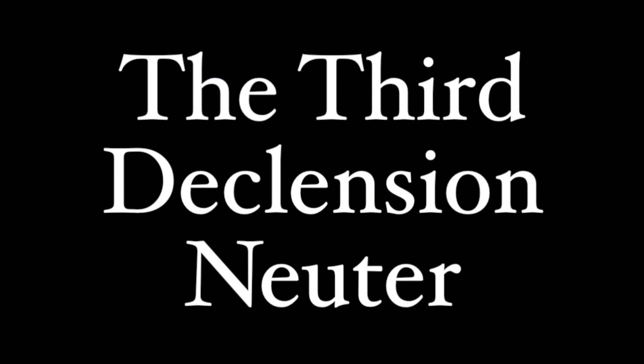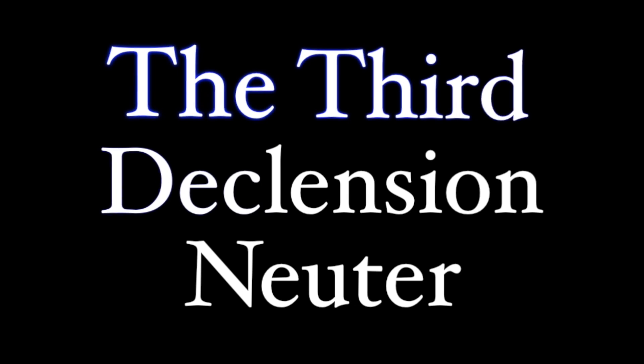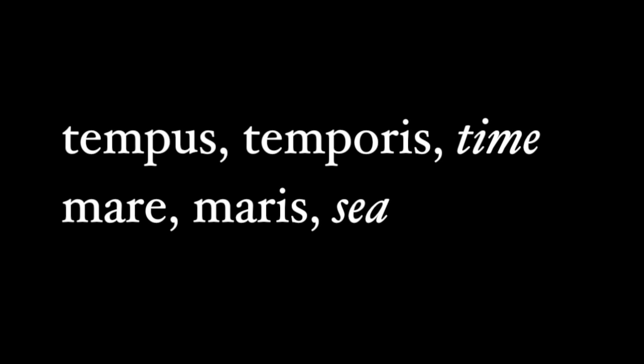These nouns are different from the regular nouns of the third declension, which can be either masculine or feminine. We will be discussing words like tempus and mare. Third declension nouns must end in -is in their genitive case, and for third declension neuters this is still the case. All third declension nouns must end in -is in the genitive singular, so third declension neuters must still end in -is in the genitive singular. It's some of the other endings that are slightly different.